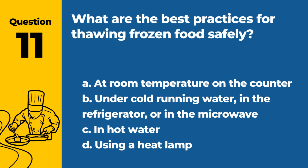Question 11. What are the best practices for thawing frozen food safely? A. At room temperature on the counter. B. Under cold running water, in the refrigerator, or in the microwave. C. In hot water. D. Using a heat lamp. Answer: B. Under cold running water, in the refrigerator, or in the microwave. The best practices for thawing frozen food safely include under cold running water, in the refrigerator, or using a microwave.